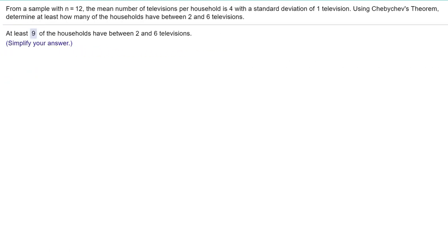Okay, here we do not know the type of distribution, but we are told to use Chebyshev's anyway. The sample size n is 12. The mean number of TVs is 4 with a standard deviation of one TV. They want to know how many households have between two and six TVs.